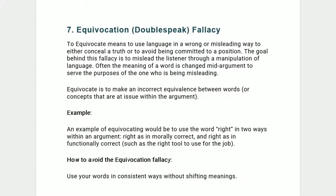Seven, equivocation — double-speak fallacy. To equivocate means to use language in a wrong or misleading way to either conceal a truth or to avoid being committed to a position. The goal is to mislead the listener through a manipulation of language. Often the meaning of a word is changed mid-argument. An example would be using the word 'right' in two ways: right as in morally correct, and right as in functionally correct, such as the right tool to use for the job. How to avoid it: use your words in consistent ways without shifting meanings.